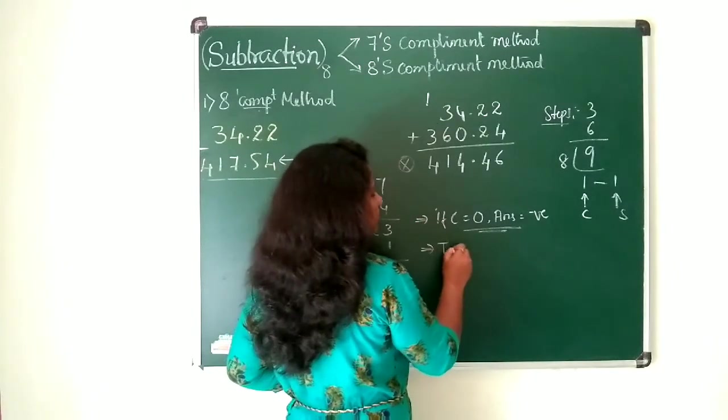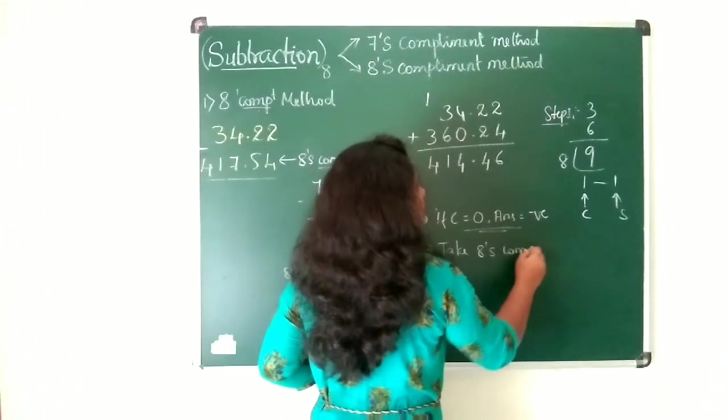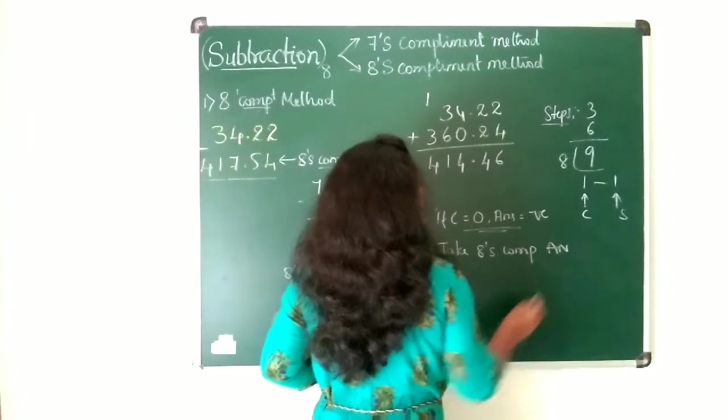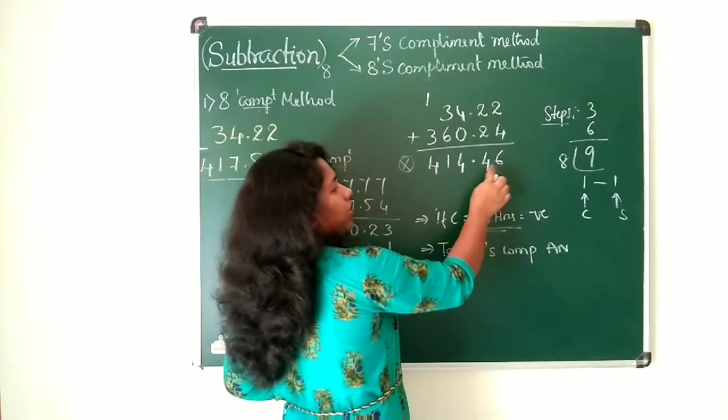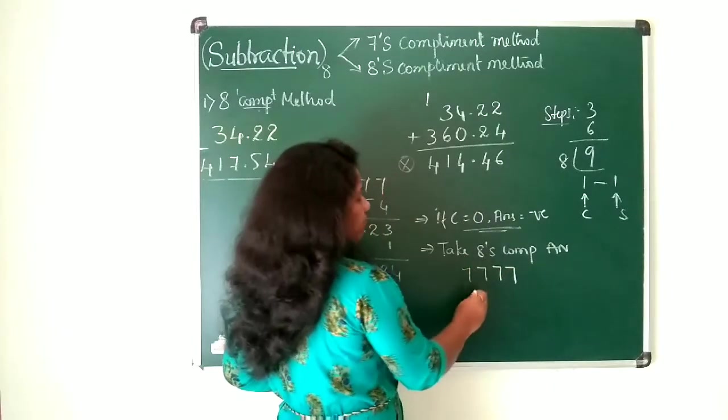Second, what you need to do? You need to take 8's complement for the answer. How to take? You need to count the positions: 1, 2, 3, 4, 5. So 5 times you need to write 7. Then subtract this.